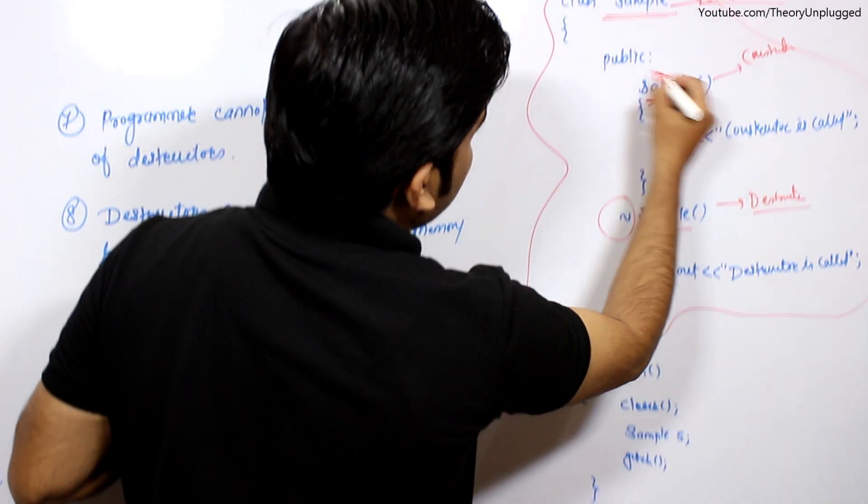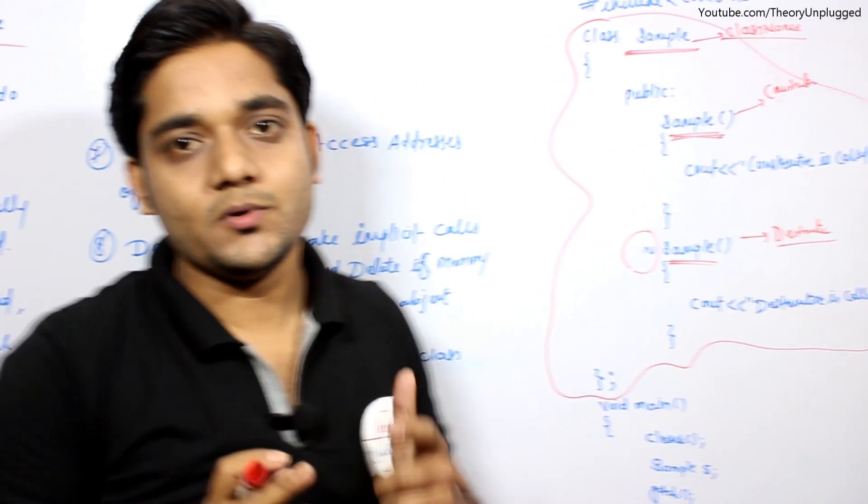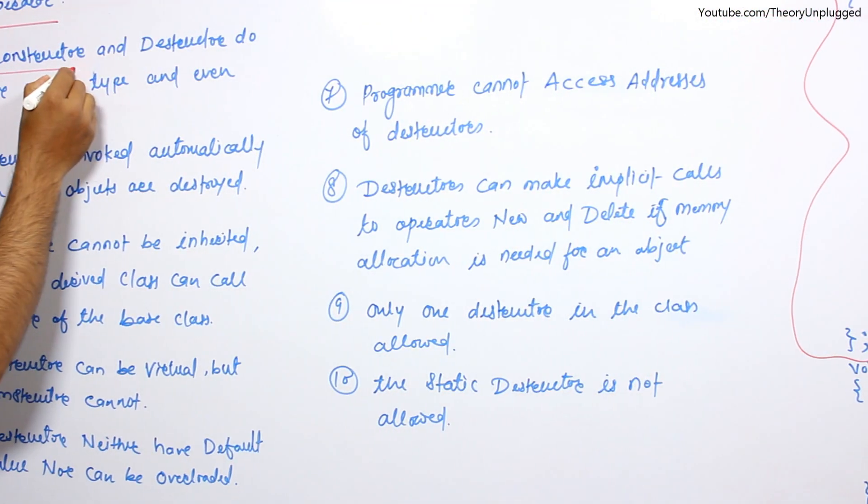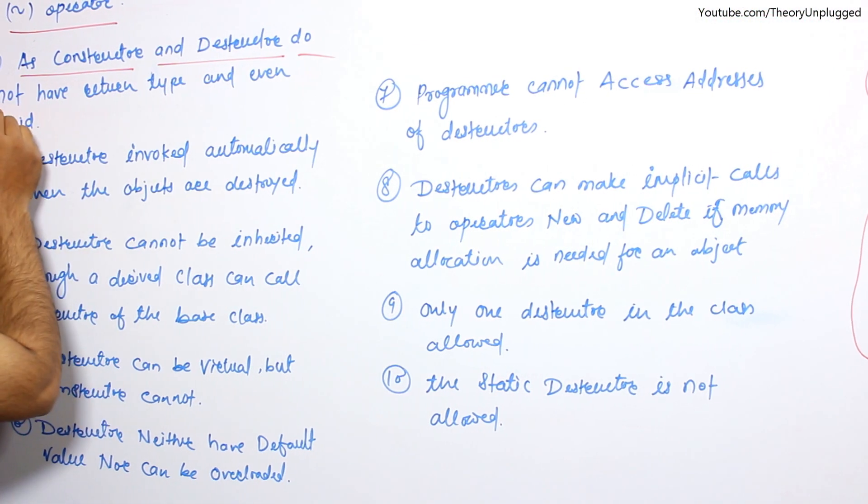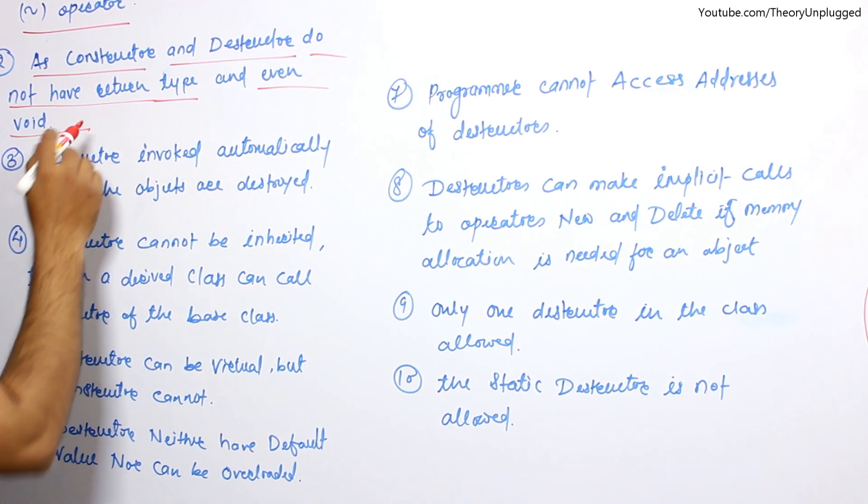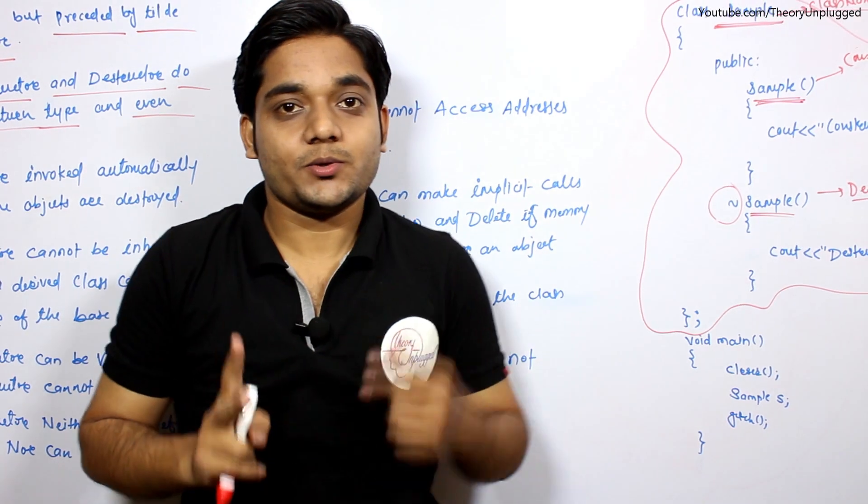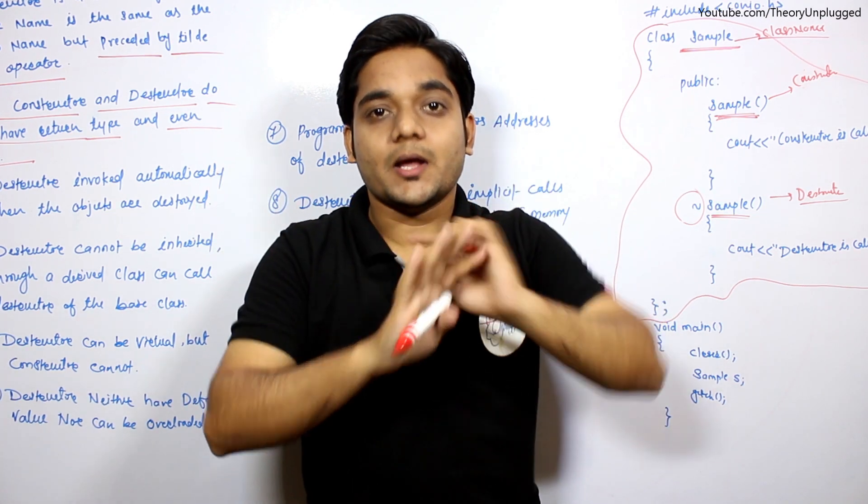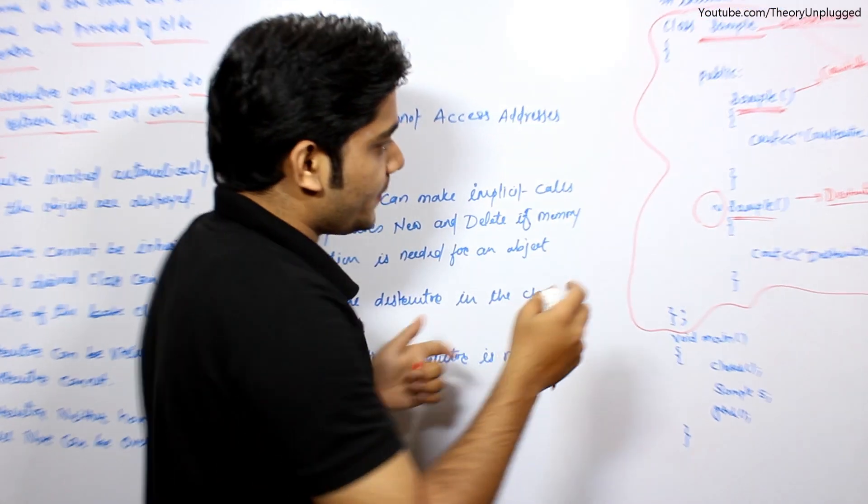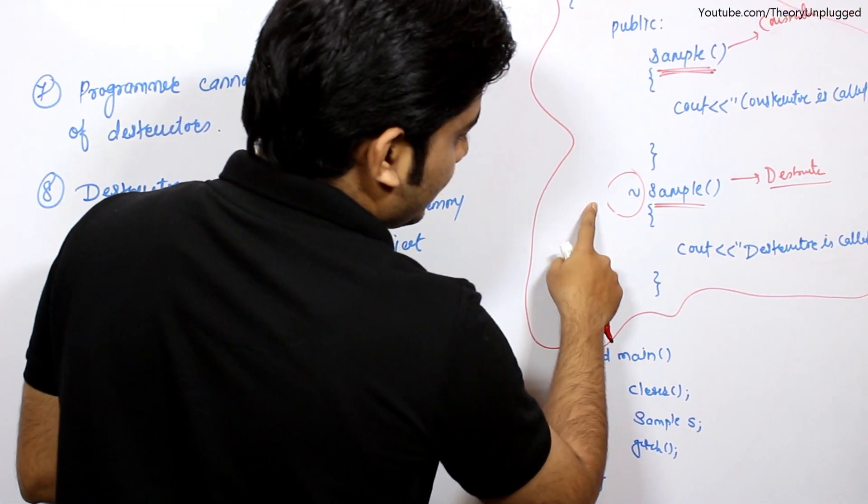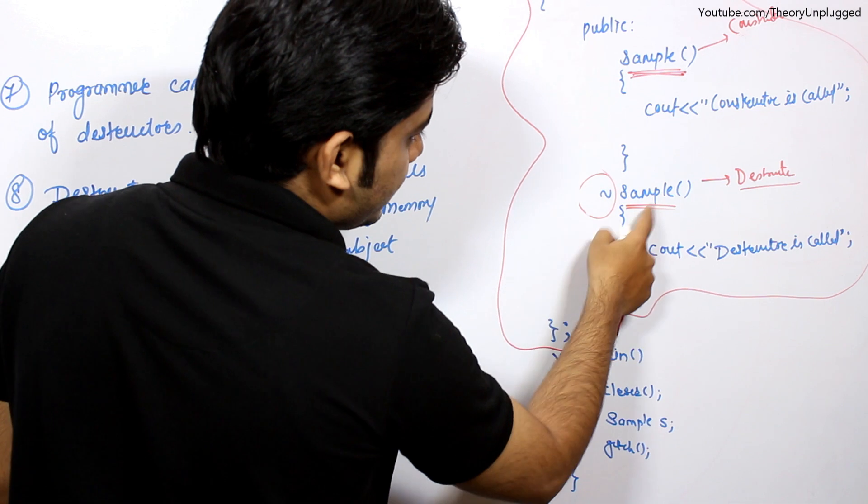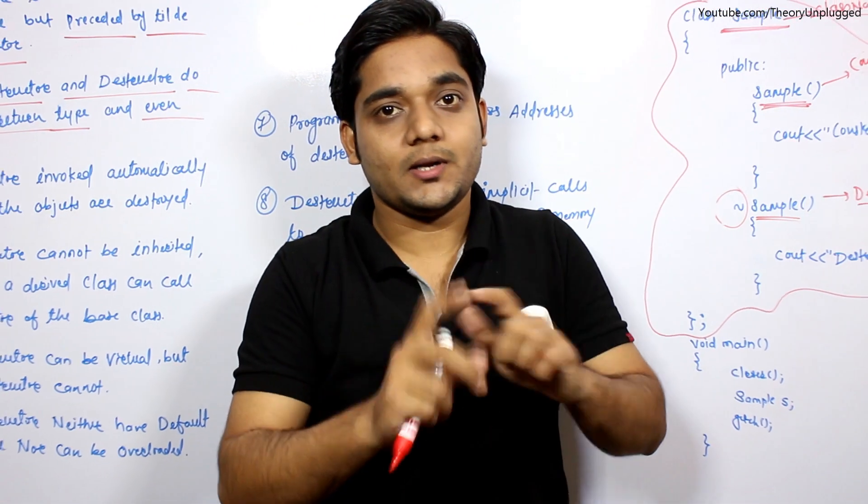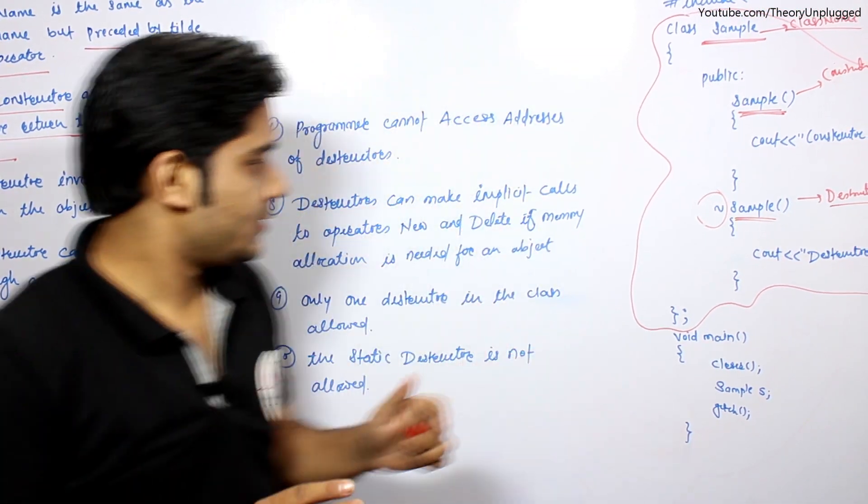Second point: destructor does not have return type, even void. Destructor or constructor never has a return type, even void. So we can see here there is no return type, nothing is there, not even void written, that's why this is a destructor. In destructor you can never return a value.